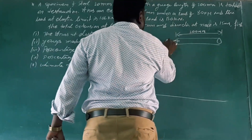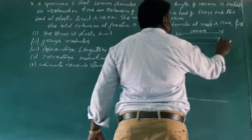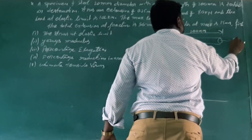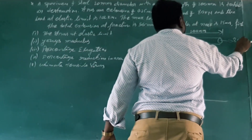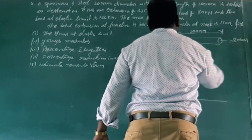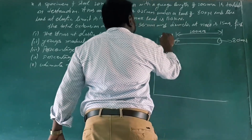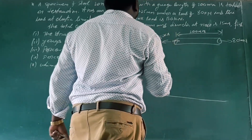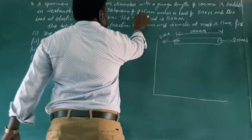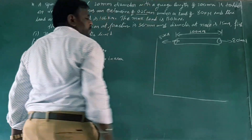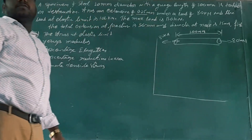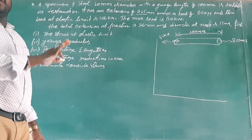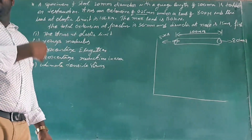If you look at point 3 on the stress-strain curve: the load at the proportional limit is 80 kilonewtons and the extension is 0.25 mm.